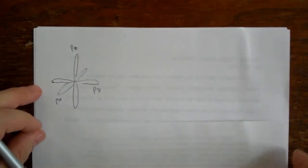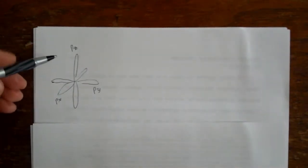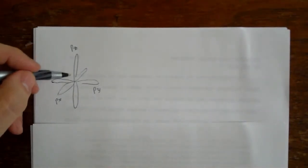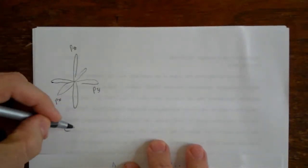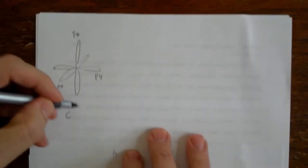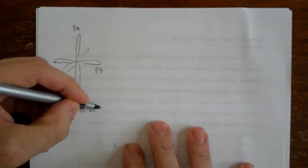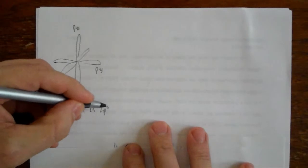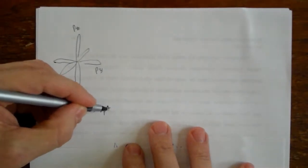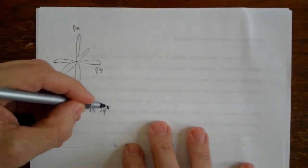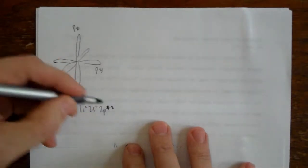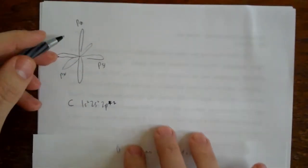You may recall from GenChem that the carbon, just a carbon atom as an example, the electronic configuration for a carbon atom is 1s2, 2s2, 2p2. That's the electronic configuration of it.